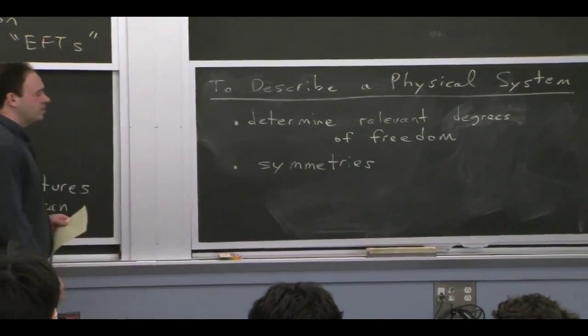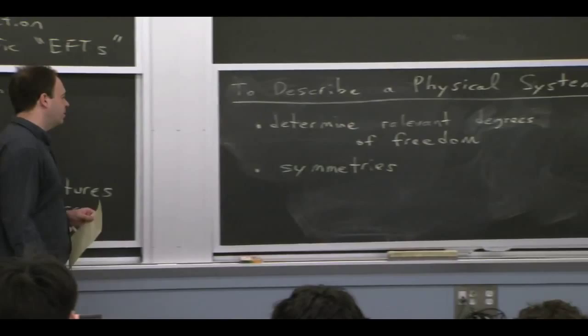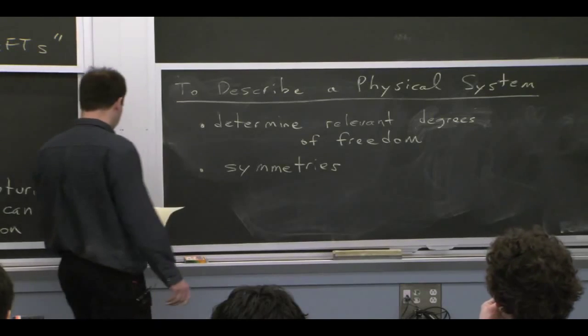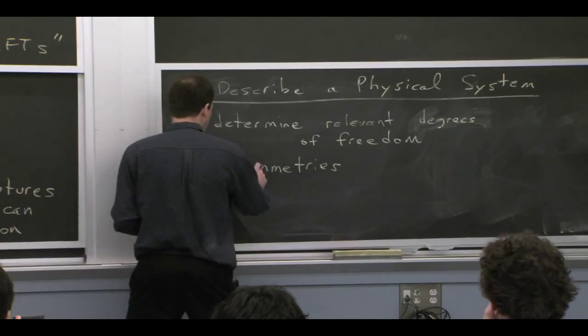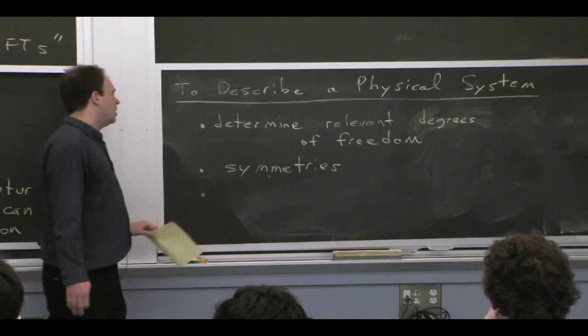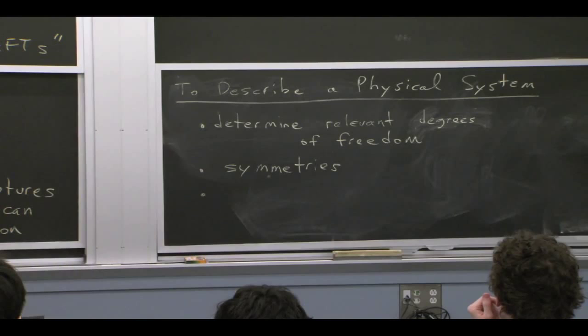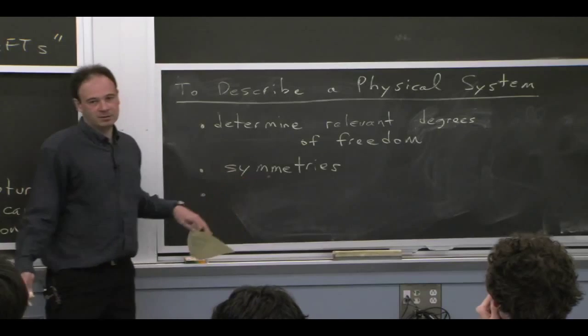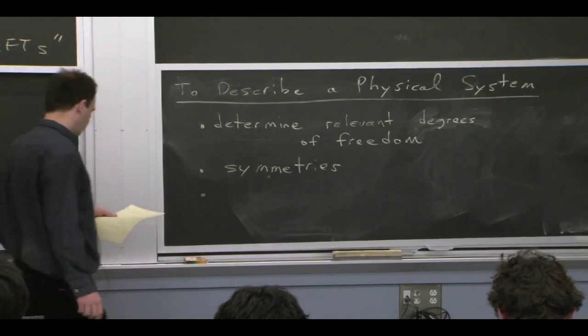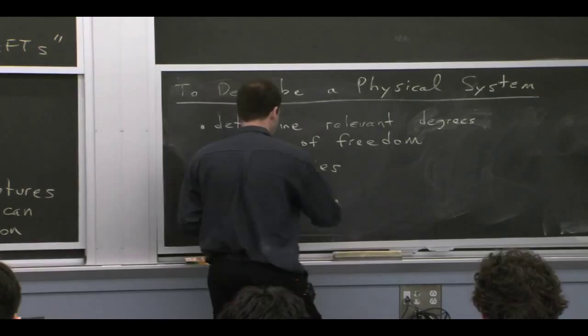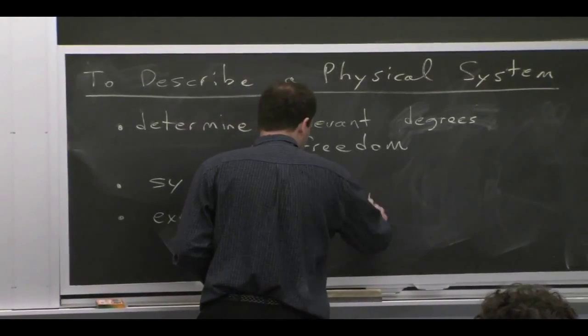You also want to think about the symmetries. Sometimes that guides you in thinking about the relevant degrees of freedom. Sometimes these things go hand in hand. But that's certainly an important ingredient in developing the effective field theory. And you also have to be careful here, because sometimes you might have a theory that has no symmetry or doesn't have an apparent symmetry. But when you start expanding, which is what I've argued you're going to be doing, when you start expanding, you may have a symmetry suddenly appear. And we'll actually talk about several examples of that happening throughout the course as well. So your effective field theory may have more symmetry than the theory you started with. Because you've neglected something, you could have more symmetry.